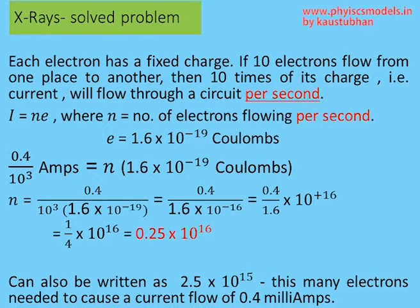Therefore, the equation simply becomes current I is equal to number of electrons n into e, which is the charge per electron. The charge per electron is well known - that's 1.6 into 10 to the power minus 19 coulombs.